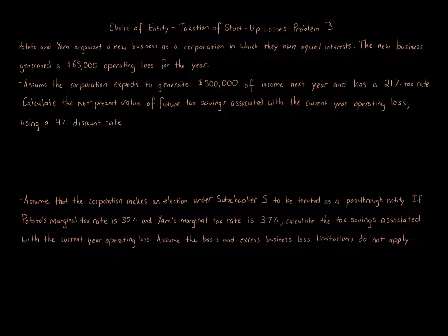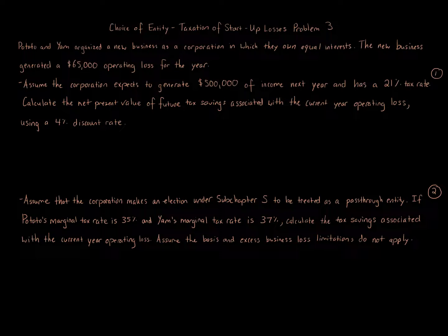We've got two different variations to address. Variation one is the top question and variation two follows. An important point: the problem just says 'corporation' — it doesn't say S corporation or C corporation. The default for tax purposes is a C corporation. The tax law works this way: if you're a corporation and you qualify, you can elect S status, but if you don't make that election, you are a C corporation. Notice that in variation two it says 'assume the corporation makes the election under Subchapter S to be treated as a pass-through entity' — so that's now an S corporation.